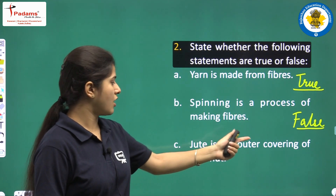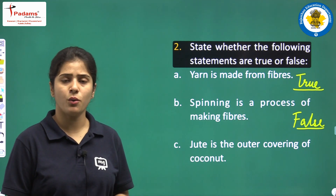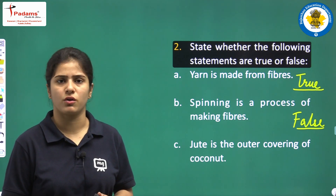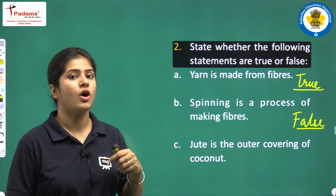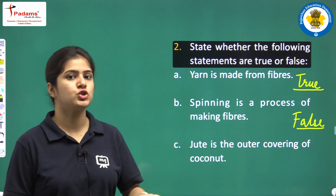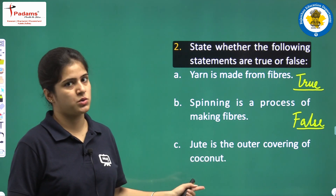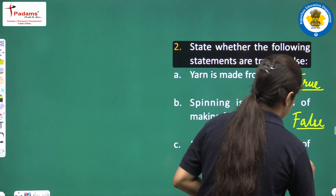Next statement: Jute is the outer covering of coconut. No, jute is not the outer covering of coconut. Jute is obtained from the stem of the jute plant, so it is not the outer covering of coconut. This statement is false.